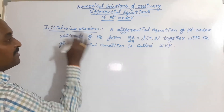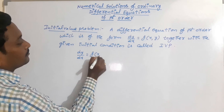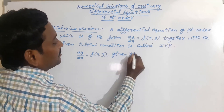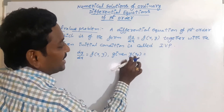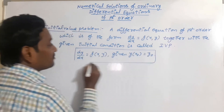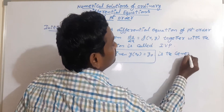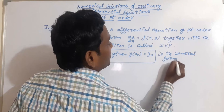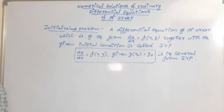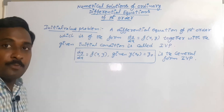The general form of the initial value problem is dy by dx — a differential equation of first order — with the given condition. The y value at given point x-naught is y-naught. This is the general form of the initial value problem.